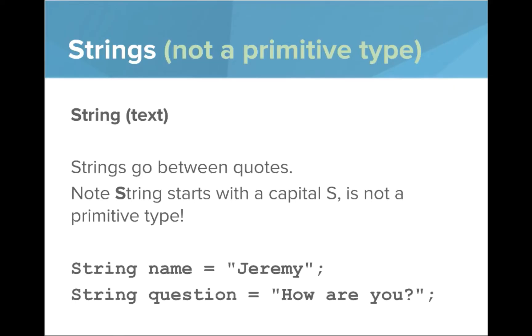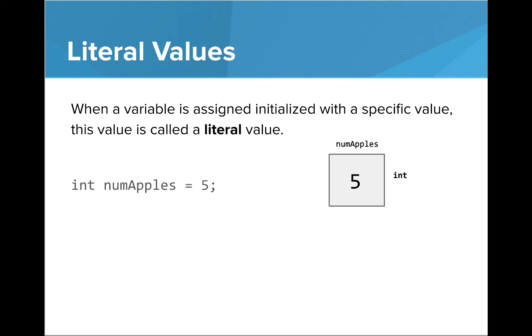Values assigned to variables are called literal values. A literal value is a value that is written exactly as it's meant to be interpreted and is the source code representation of a fixed value. While the value of numApples can be changed and may eventually refer to another value, the value 5 cannot be changed and is a fixed number.